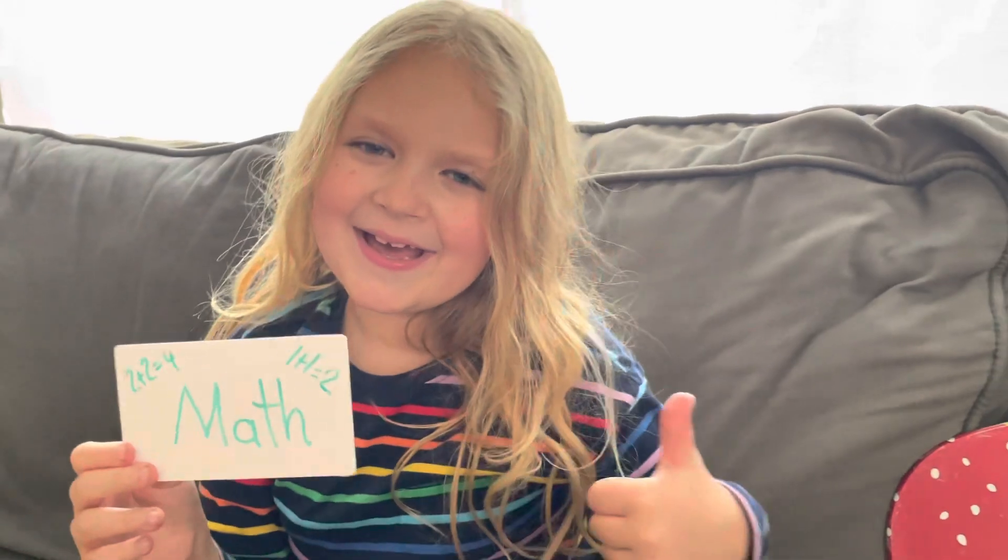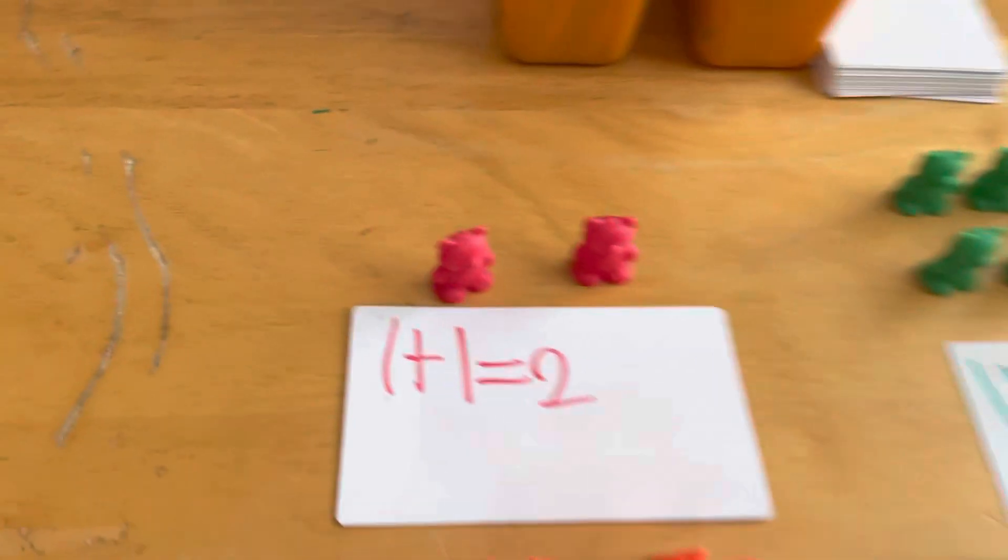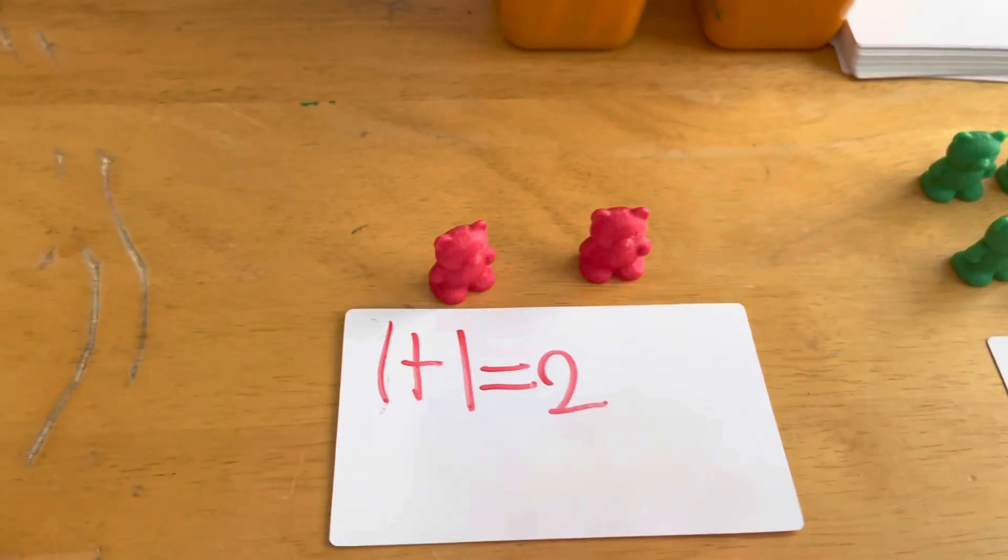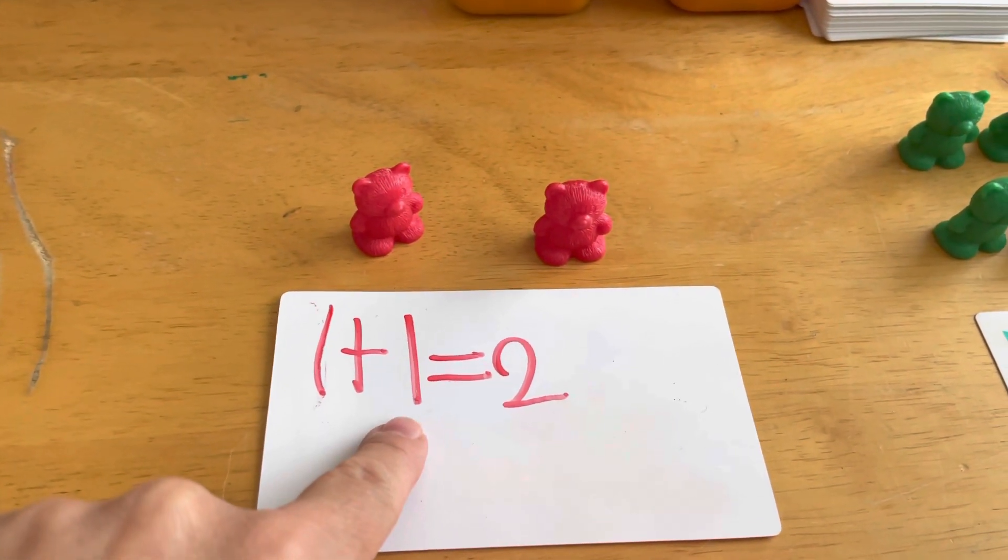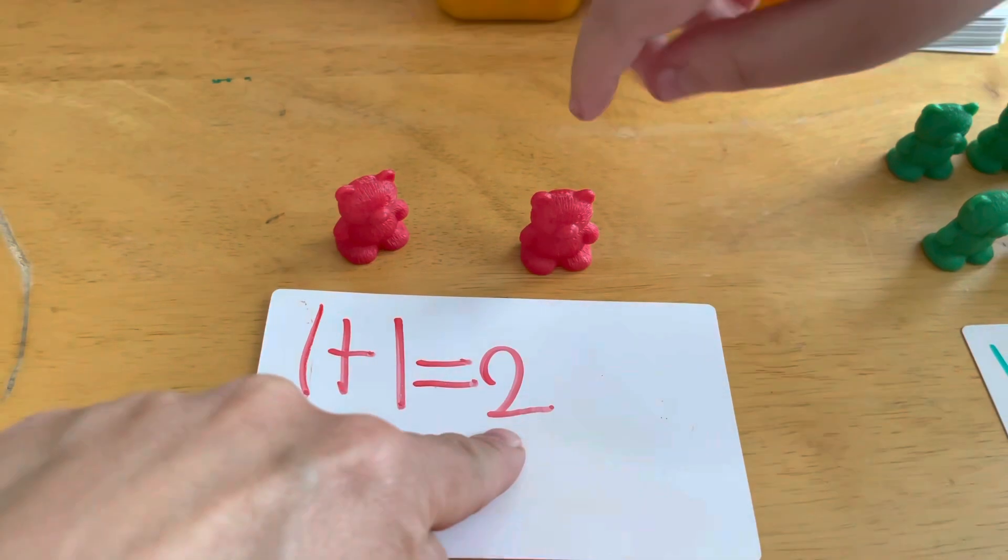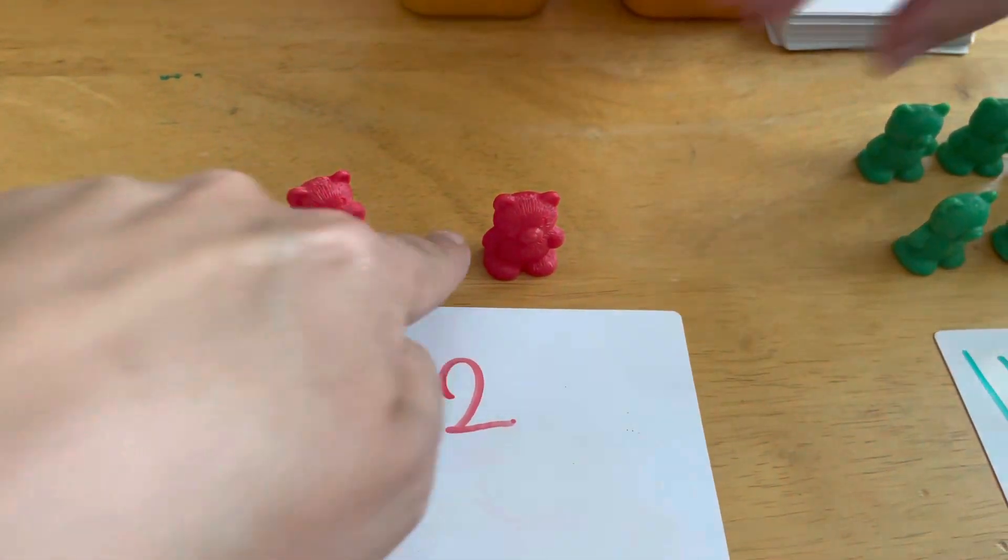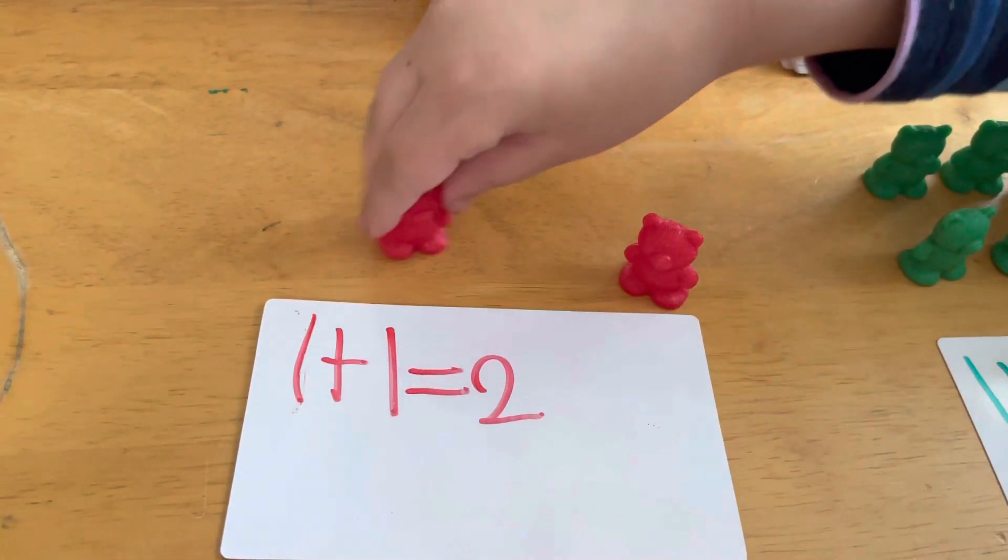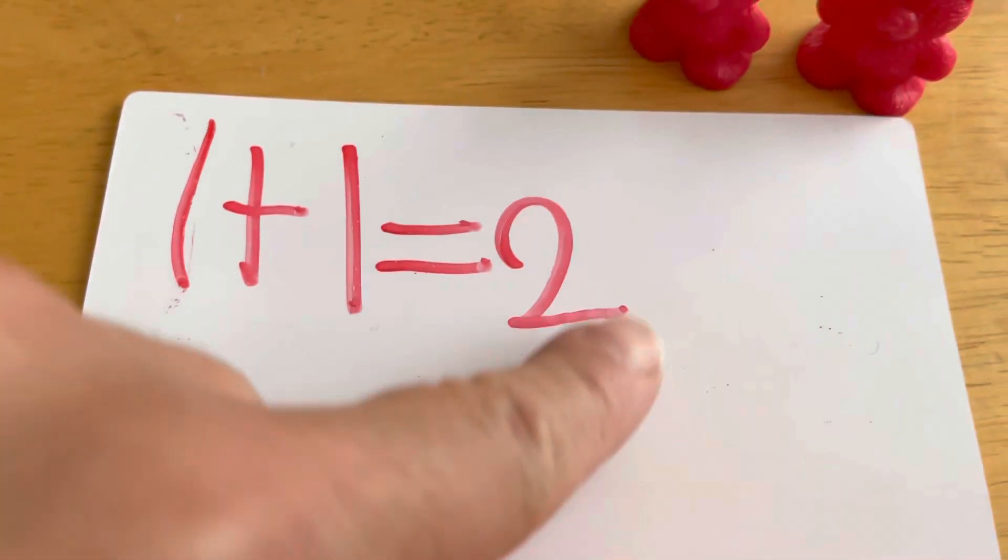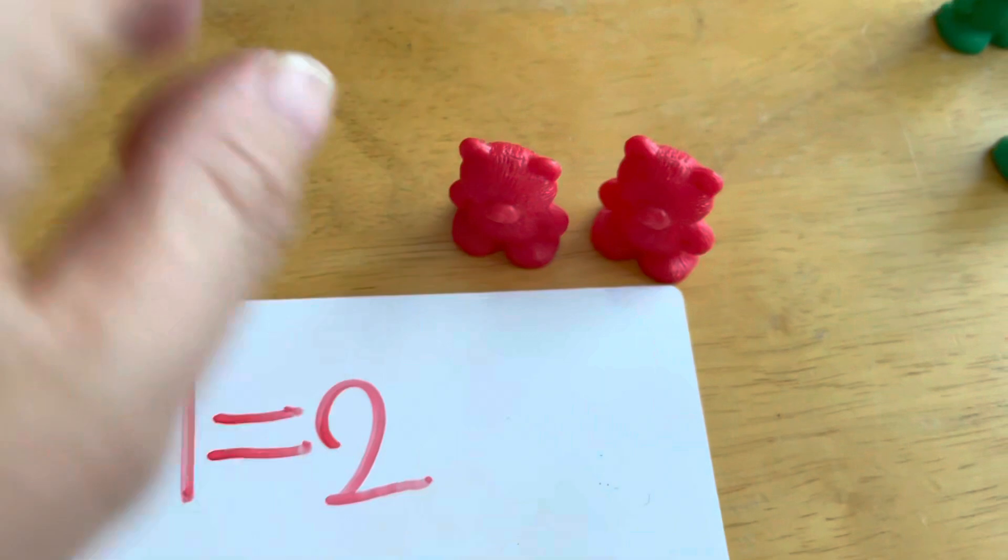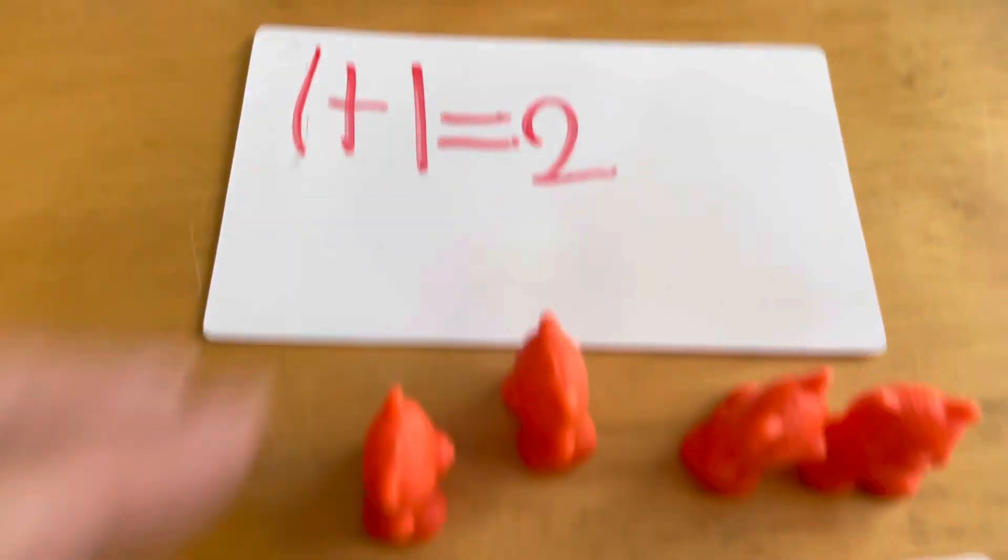It's math time, great! Thanks Caroline. First, what do we got here? One plus one equals two, okay. So let's move the bears, one, two. All right, the answer is two. One, two, okay. What a coincidence.